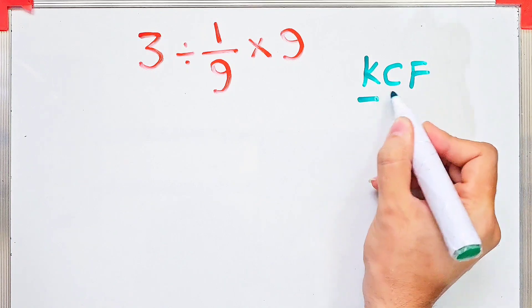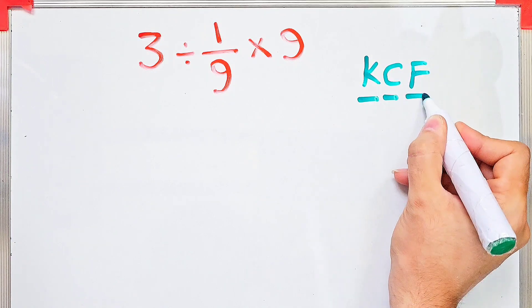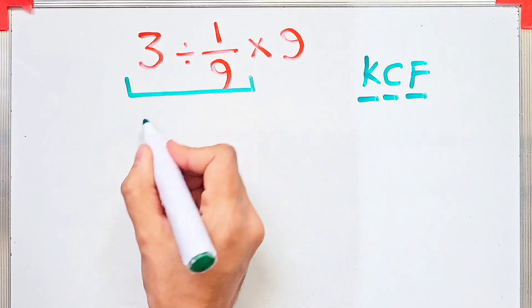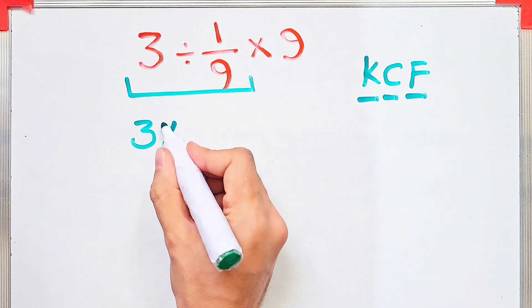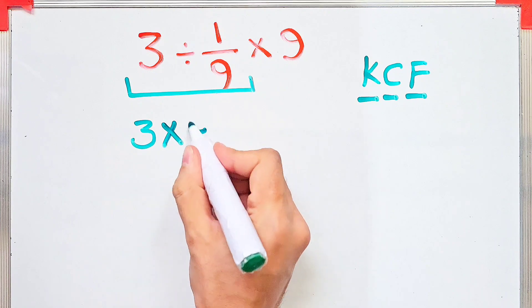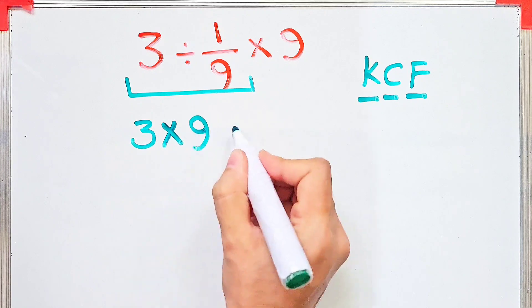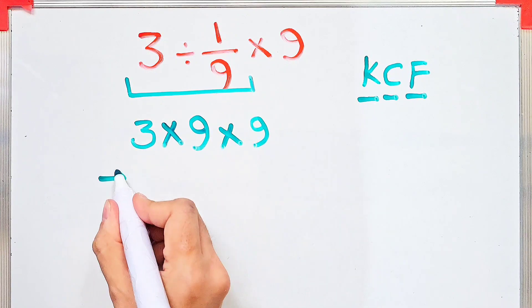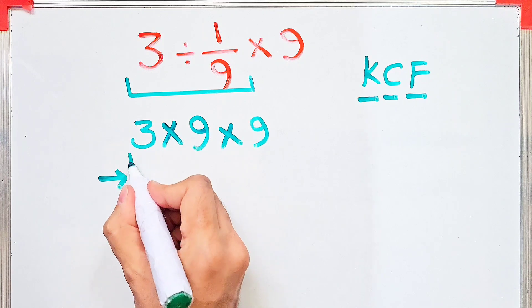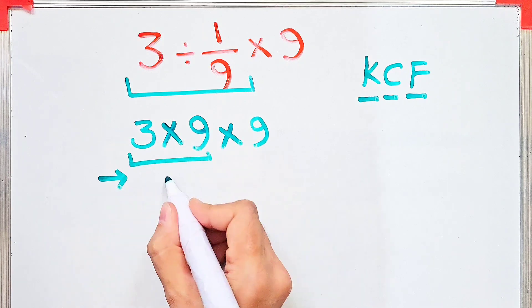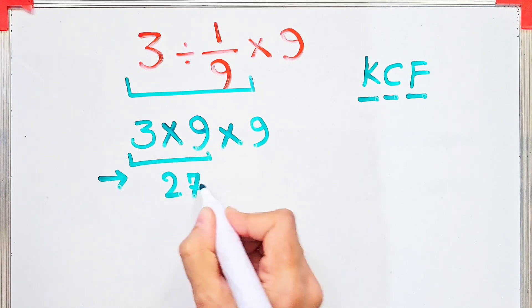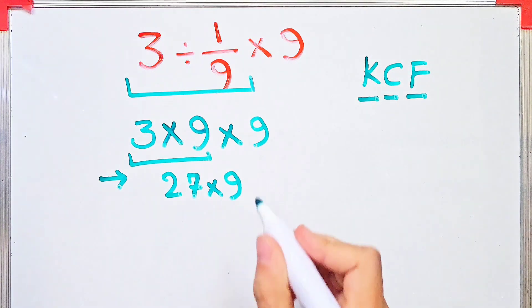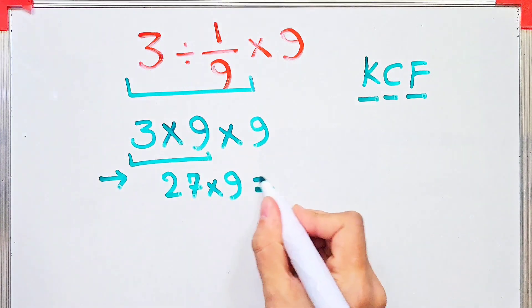We keep the first number, then change the sign, then flip the second fraction. As you can see in the image, we keep the first number as it is, change the division sign to multiplication, then flip the second fraction. Now in the new expression we do the multiplications and find the final answer: 243.